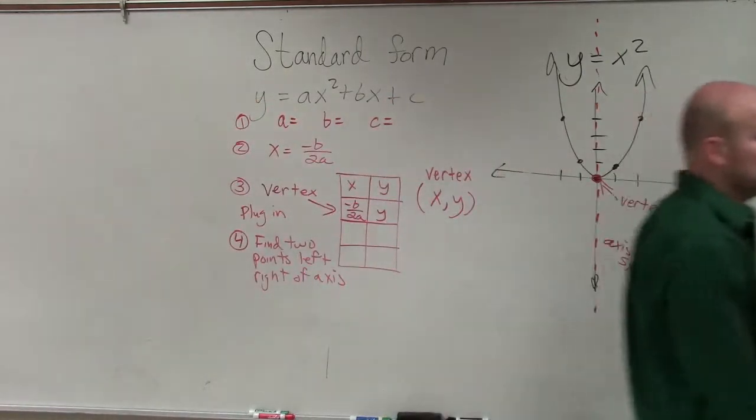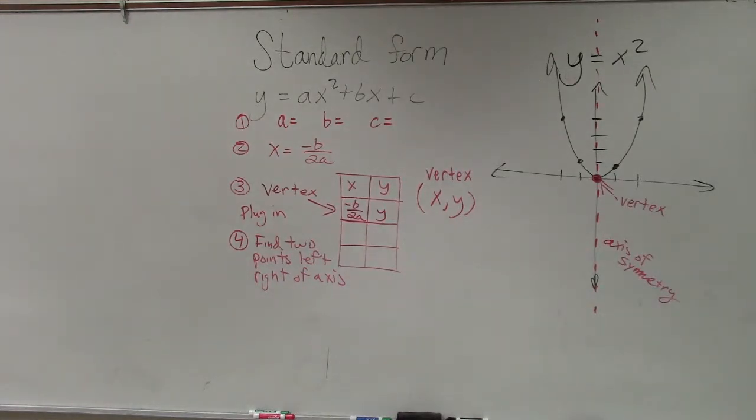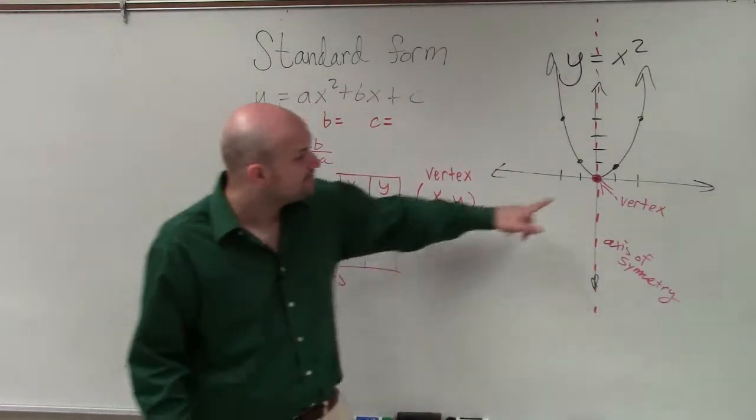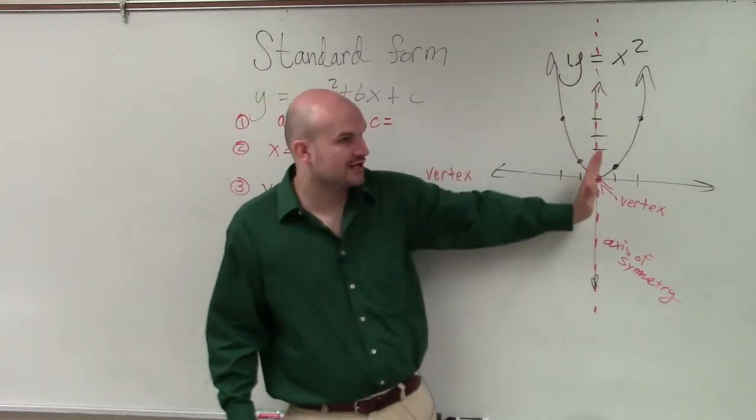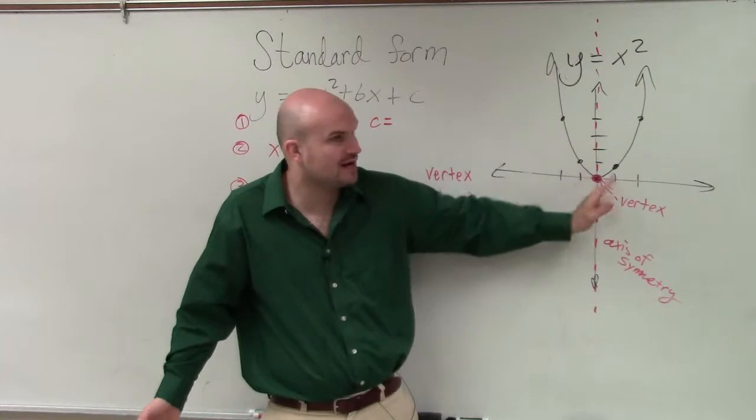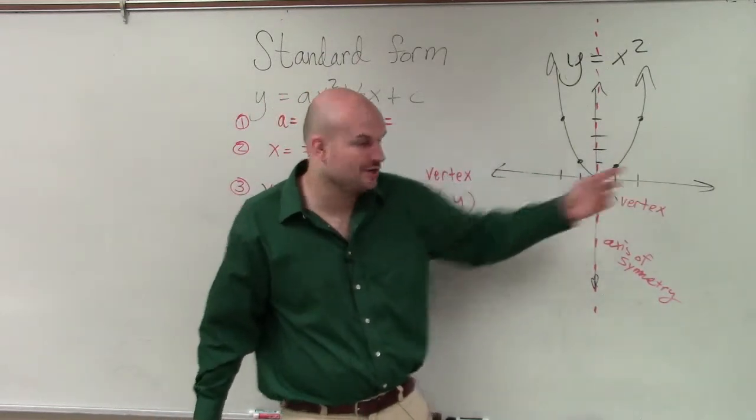Now, step number four is going to be find two points left or right of the axis of symmetry. So we're going to do some examples, where some examples, it's going to be easy to pick two points to the right. We're going to do some examples where it's going to be easy to pick two points to the left. It's all going to depend on where the graph is. For the standard graph, it really doesn't matter. But what you're going to do is you're going to pick two points. So if here's my axis of symmetry, you want to make this easy. We're not making this hard. Pick two points that are to the right. Well, let's do one, and let's do two.